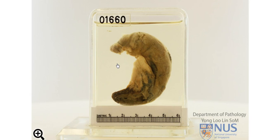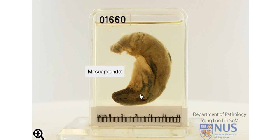Hello, here we're looking at an appendix. This is the proximal end which has been tied off, and here is the tip of the appendix. Just to orientate you a little bit, we're looking at the serosal surface here. This is the meso-appendicil fat, and at the tip region the appendix has been bisected longitudinally.